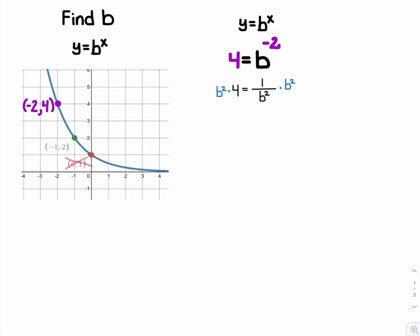Once I multiply both sides by b squared, I'm going to end up getting 4b^2 = 1.